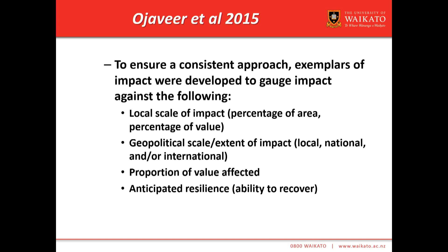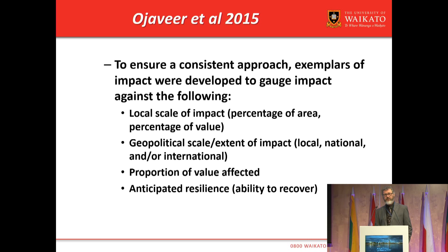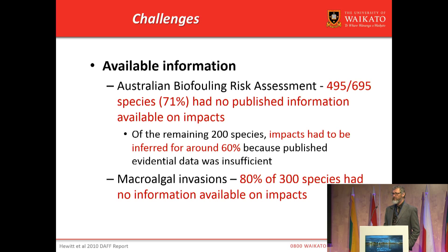The Ojaveer et al. classification focused on value categorizations in environmental, economic, social, and cultural terms — developed in consultation with political stakeholders and regulators. The scales of impact increase along a suite of dimensions from no discernible impact to extreme, which may result in irreversibility. The absence of knowledge is critical here: a precautionary approach would dictate that the absence of knowledge makes that species likely to have a high impact or high consequence. We believe this is highly relevant to managers and stakeholders. For environmental values, we would look at the scale of impact at the local scale, the geopolitical scale, whether it transcends boundaries, the proportion of value affected globally, and the anticipated resilience — do we believe that if the introduced species were removed, we would have recovery of the system, or has there been a regime shift?